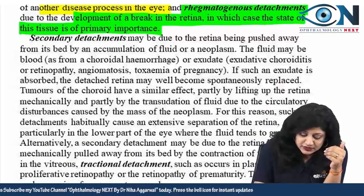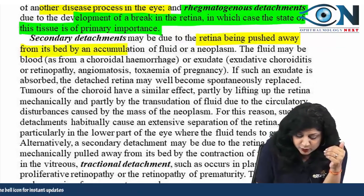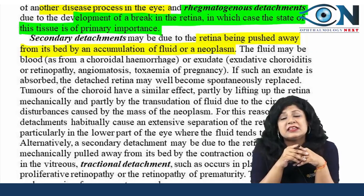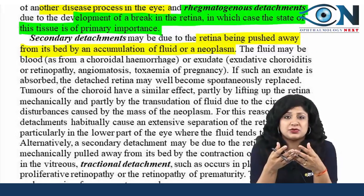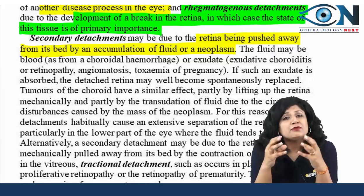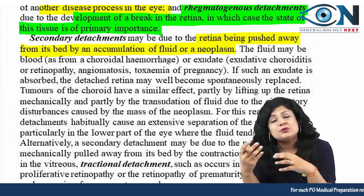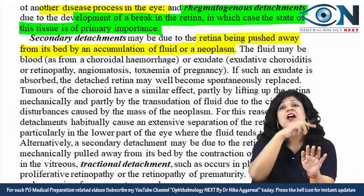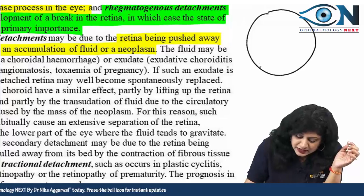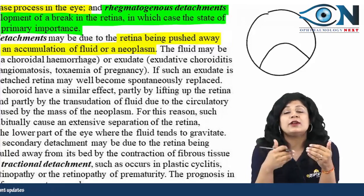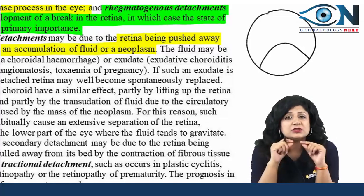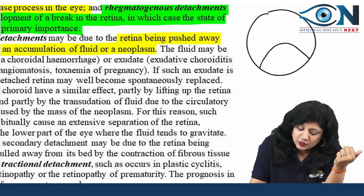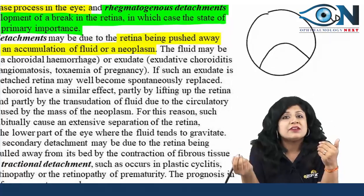Exudative retinal detachment occurs when the retina is pushed away from its bed by an accumulation of exudate, inflammatory cells, fluid, or tumor cells pushing toward the vitreous cavity. This pushing always creates a convex shape. So exudative RD always has a convex or smooth contour — you cannot make tissue concave when pushing it.